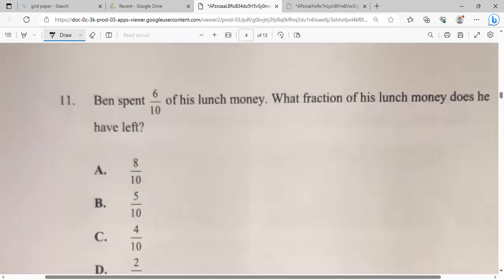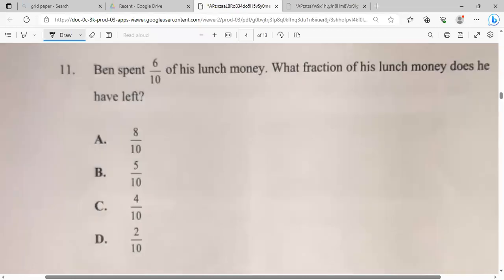Ben spent six tenths of his lunch money. What fraction of his lunch money does he have left? So what we can do is write the whole as the denominator. So that will be ten over ten. That will represent one. And they're going to be subtracting six over ten. Once you have the same denominator, we just subtract the top. So it will be ten minus six, which is four. So that will be four out of ten.